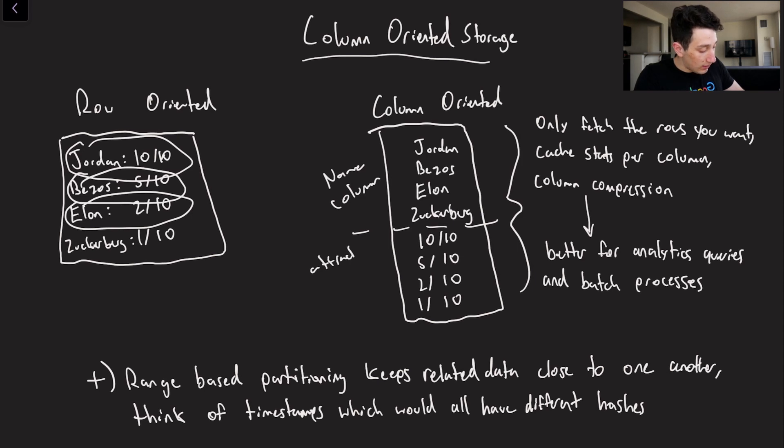And then below it we would have all of the rows in the same order for the attractiveness column. And so what that allows us to do is say we want to perform an analytical query over the attractiveness column, where we say okay well what's the mean attractiveness over this data set.